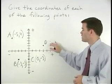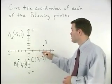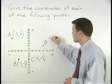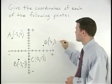And for point D, we move 4 units to the right and 2 units up. So that's 4, 2.